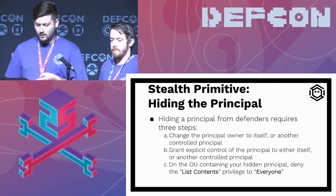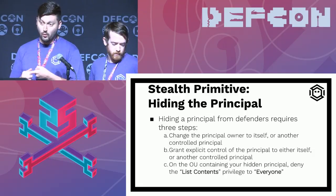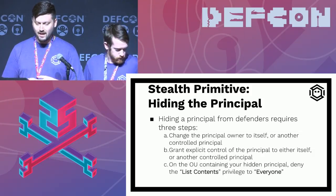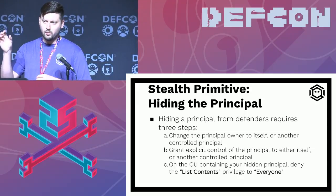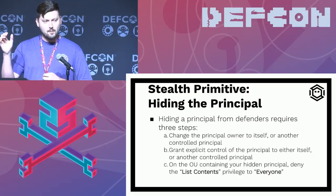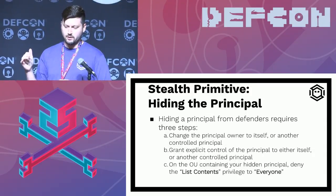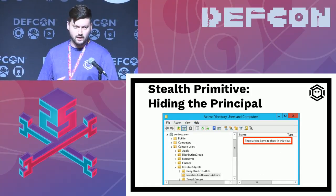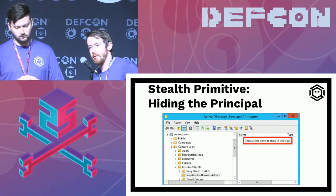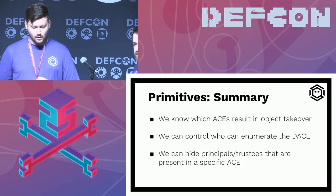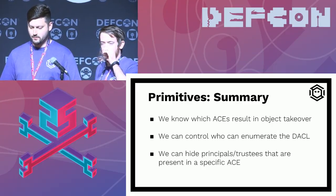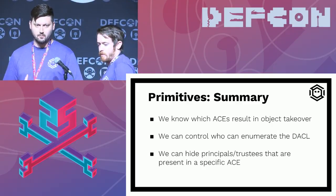I can also hide the existence of a principal I'm backdooring — this requires three steps. First, change the object owner because owners always have full control. Then grant explicit control to the object itself or another object I control. Finally, on the OU containing this user/group/computer, deny 'Everyone' the 'list contents' privilege. Then when anyone tries to look up that user in ADUC, via LDAP, or with net commands, they can't see it. To summarize: we know how to abuse ACEs to take over objects, we can control who can audit DACLs, and we can hide principals and trustees from easy identification.